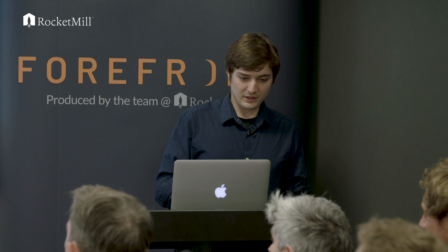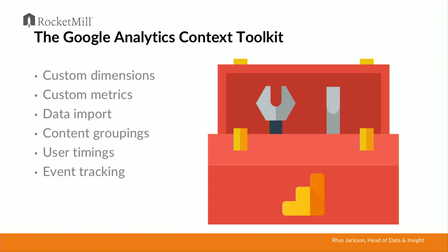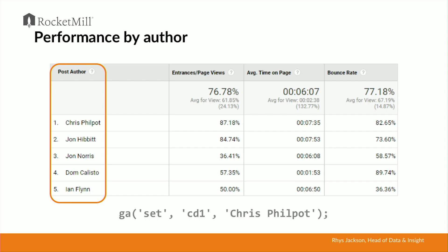With all this in mind, I want to describe how we put this into action and begin collecting data — something I call the Google Analytics Context Toolkit. It's essentially a bucket of features and functionality within Google Analytics: custom dimensions, custom metrics, user timings, event tracking, and more. To give an example, here's performance by author — if you're a publisher hiring freelancers, this custom dimension is very useful to understand which authors are performing most effectively.